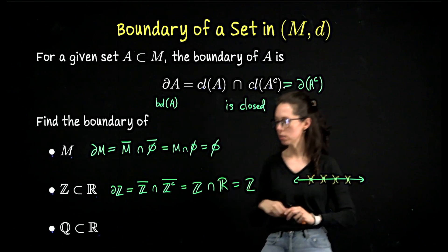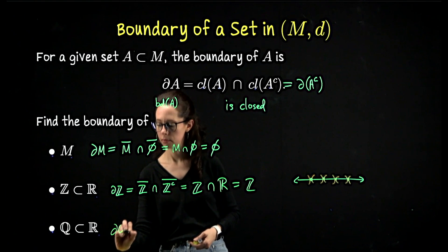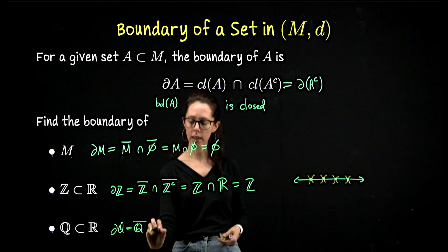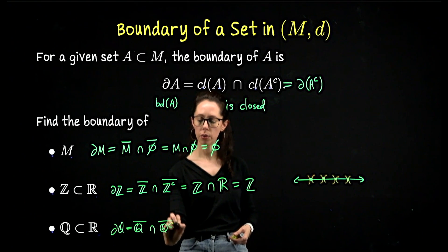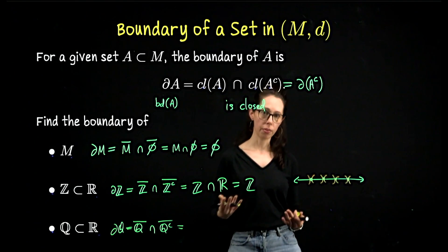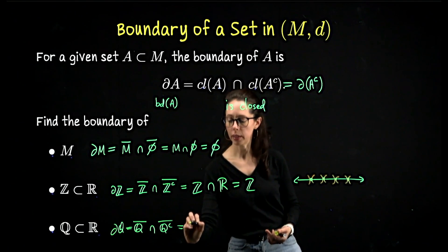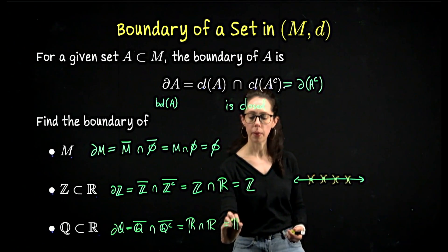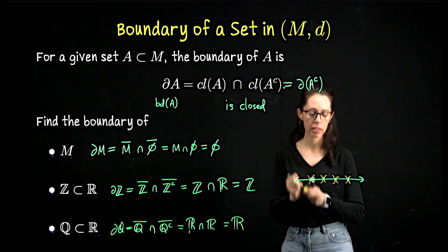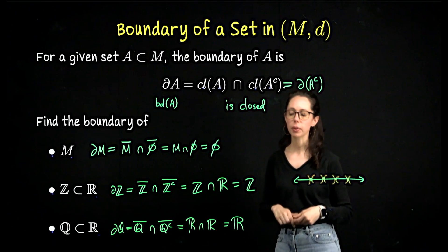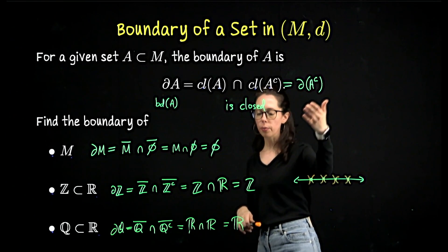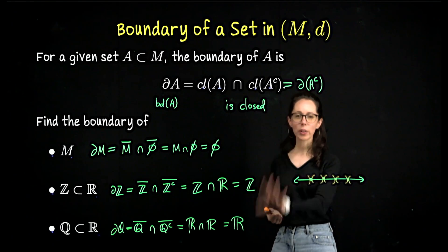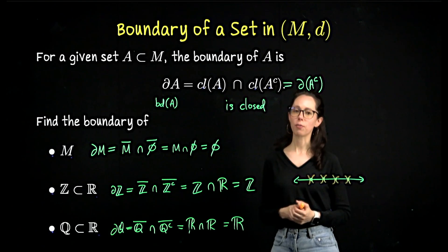For the last of these three examples, what about the rationals? We need to take the rationals and close that off, then take the irrationals and close that off. Both of those closures will be the whole real number line. So the boundary of the set of rationals is the real number line. And as we mentioned, that means it's also the boundary for the set of irrational numbers. Make sure you understand these and then we'll look at four more examples.